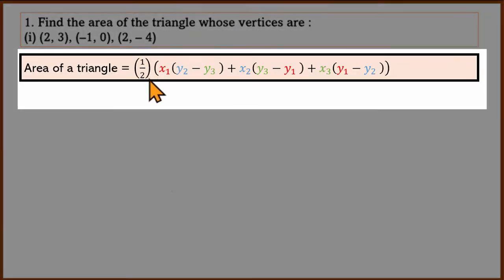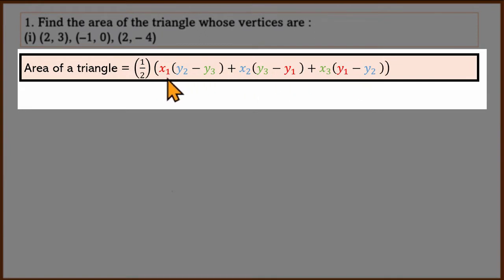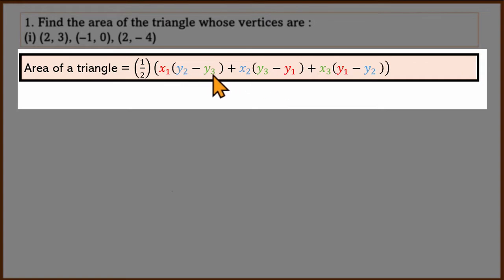This is the formula. The area of the triangle formula has a red first point: X1, Y1. Blue second point: X2, Y2. Green third point: X3, Y3.